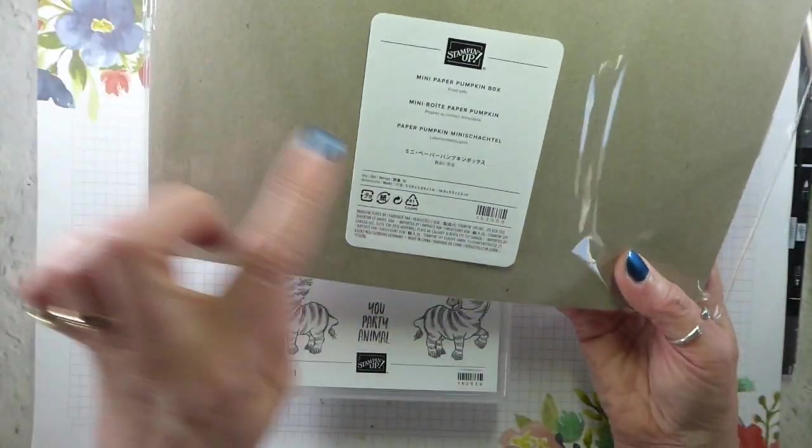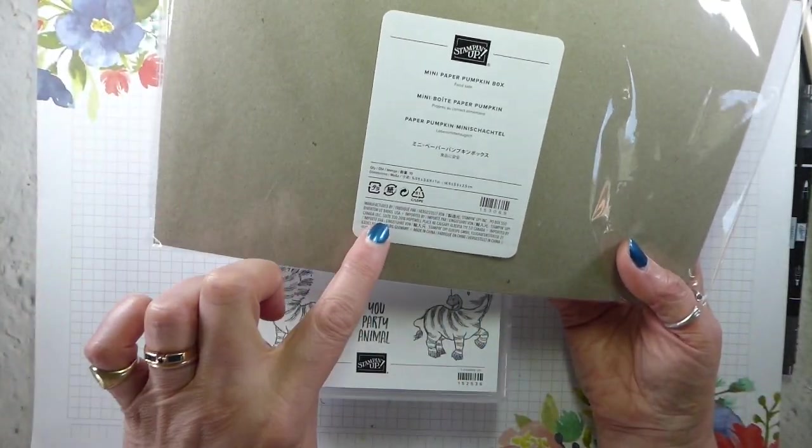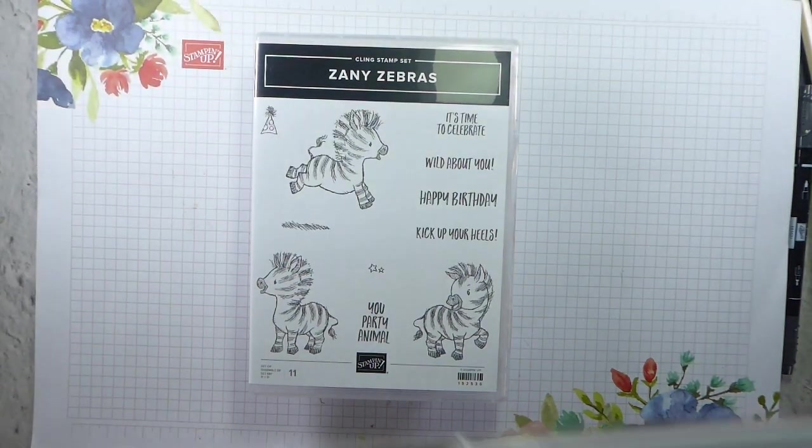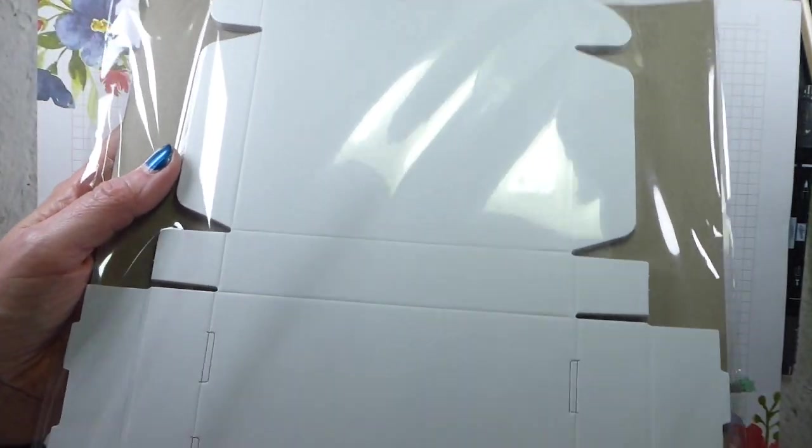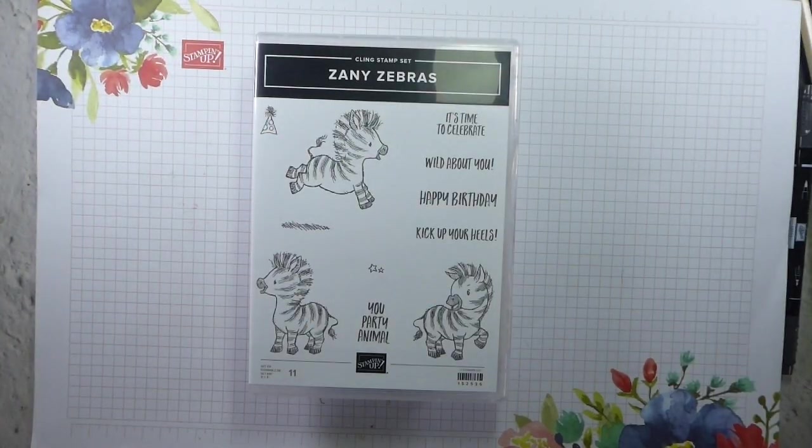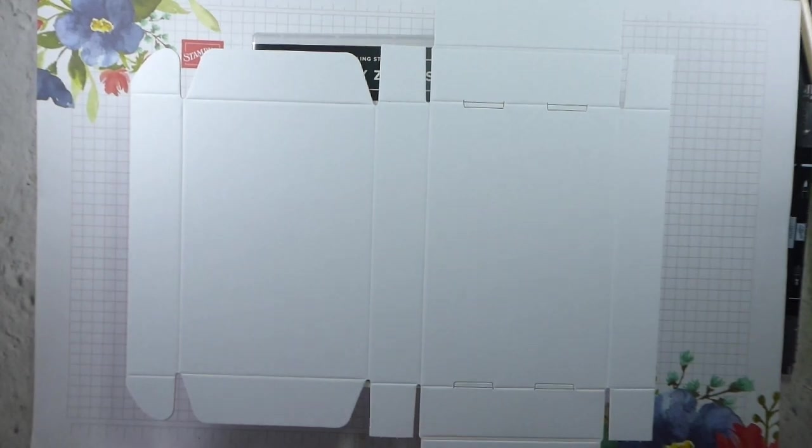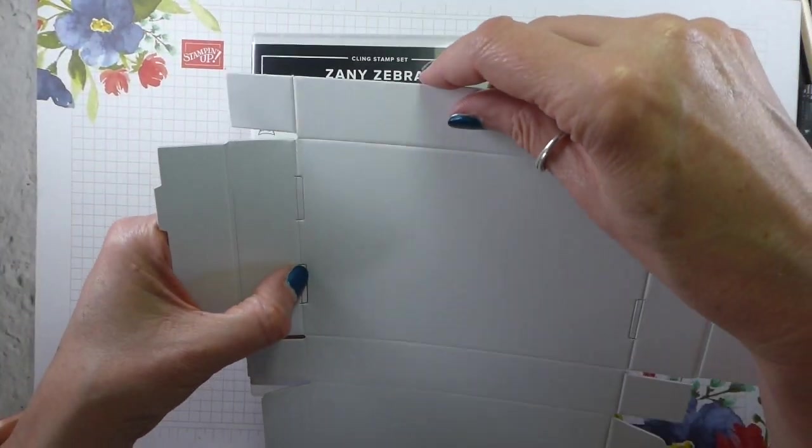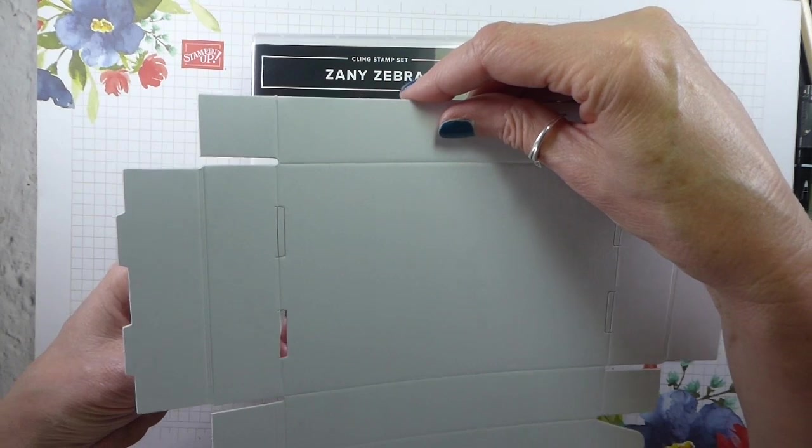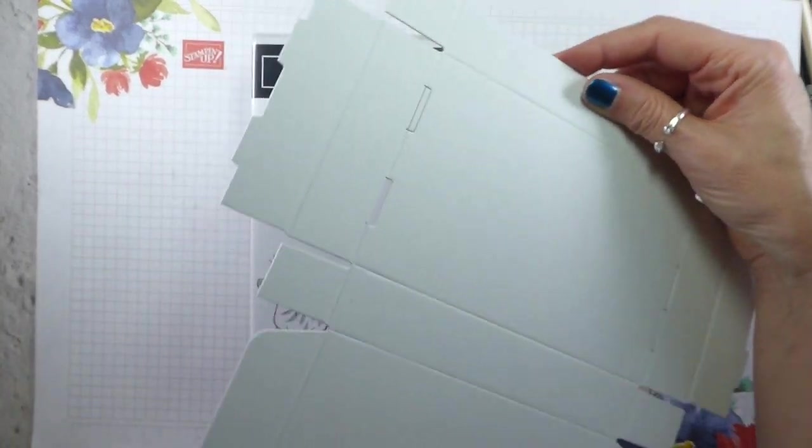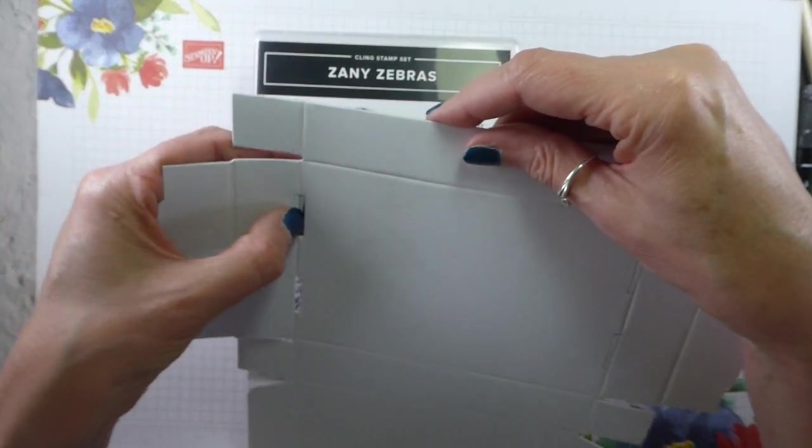But I did mention, I think it was on this Saturday, that our mini paper pumpkin boxes are perfect for our note cards and envelopes. So I thought I would take that and work from it. So these are the mini paper pumpkin boxes. They come 10 in a packet, flat packed, and sorry about the shininess.